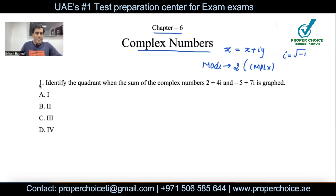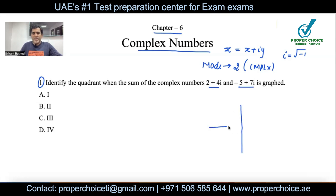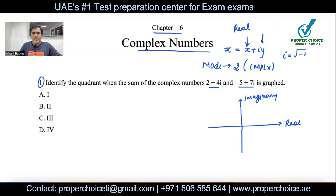Example 1: Identify the quadrant when the sum of the complex numbers (2 + 4i) and (-5 + 7i) is graphed. The complex plane can be divided into four quadrants just like the x-y plane. On the complex plane, the x-axis represents the real number and the y-axis represents the imaginary number. In the general form, x is the real part and y is the imaginary part.